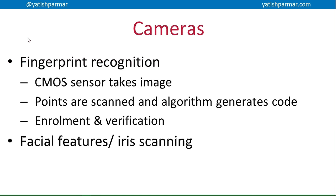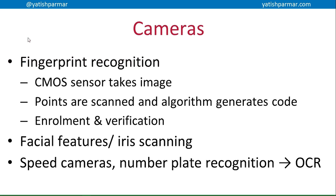You also have facial feature scanning and iris scanning. Police have used facial scanning in various places to scan faces for people they are looking for in crowds. Iris scanning is used in airports — the e-passports where you can zoom through check-in. Speed cameras are another example where cameras are used for capturing data to go into a system, again using automatic number plate recognition.